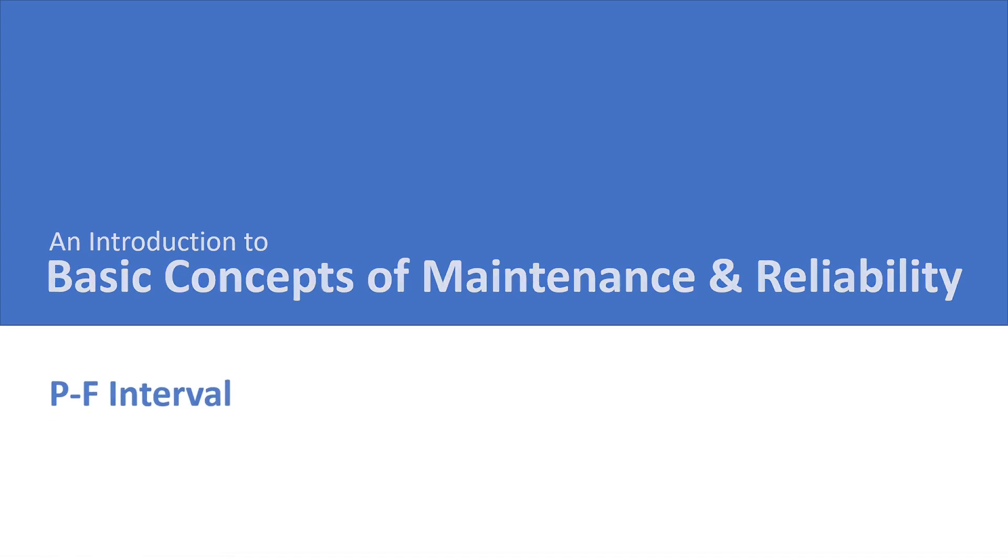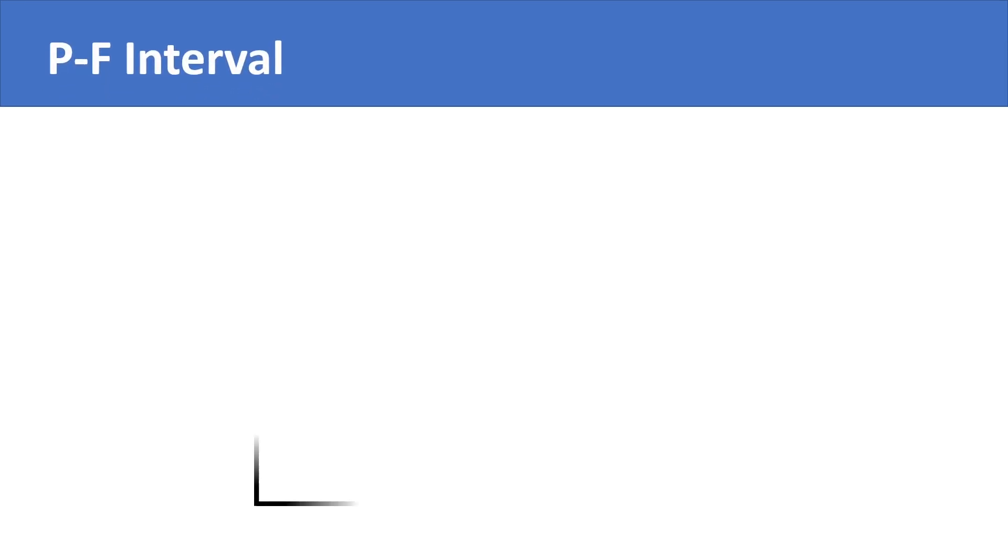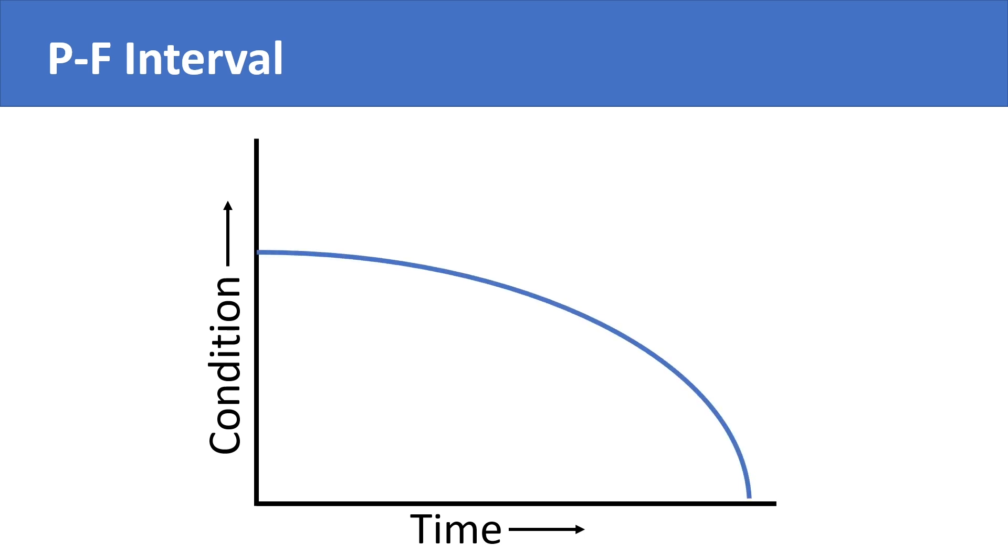If you plot a graph of how an equipment or its components condition degrades over time, you will get a plot like this. It simply shows how failure is not a sudden drop of condition but a gradual drop.